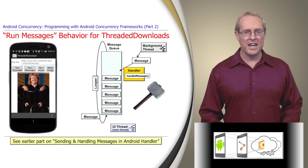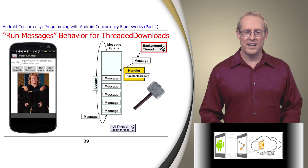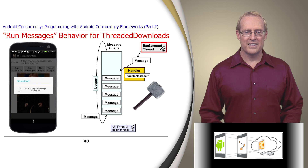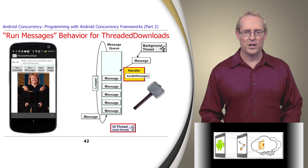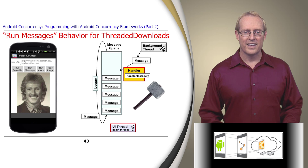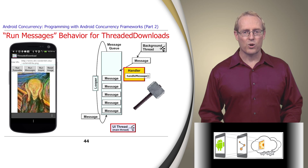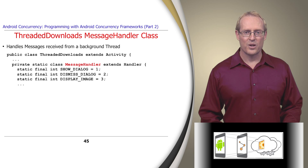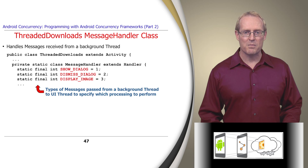The Threaded Downloads application uses this framework to retrieve and display an image by starting a background thread, downloading the image in that thread, and then sending several messages to a handler associated with the user interface thread, instructing it to display the downloaded image in that thread. This solution is more complicated than the Run Runnable implementation, since it passes messages from a background thread to the user interface thread via a MessageHandler class, which extends handler and defines three types of messages that the background thread can pass to the user interface thread, specifying which processing to perform.